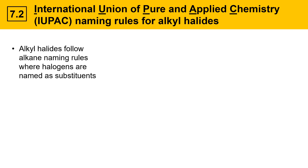Alkyl halides follow the same rules as alkanes for naming, so halogens are going to be named as substituents. This video assumes a knowledge of alkane nomenclature, and if you don't know about alkane nomenclature, you should go back and look at that before you try to understand alkyl halide nomenclature.